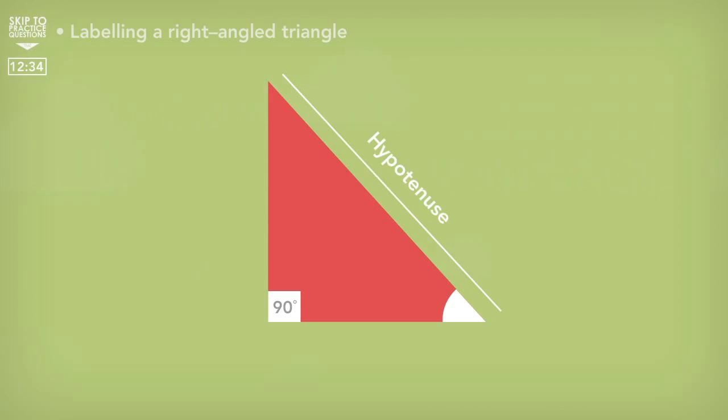So what if we had a question that focused on this angle instead? Well, based on what we just explained the hypotenuse doesn't change. It is still the longer side that is also opposite the right angle. This side would now be the opposite as it's now opposite the angle that we are focusing on. And this side would be the adjacent as it's next to the angle.